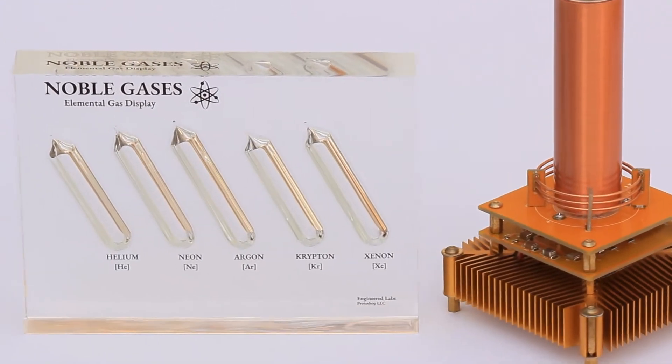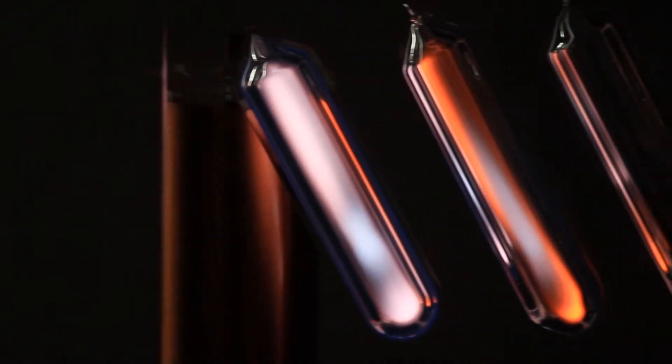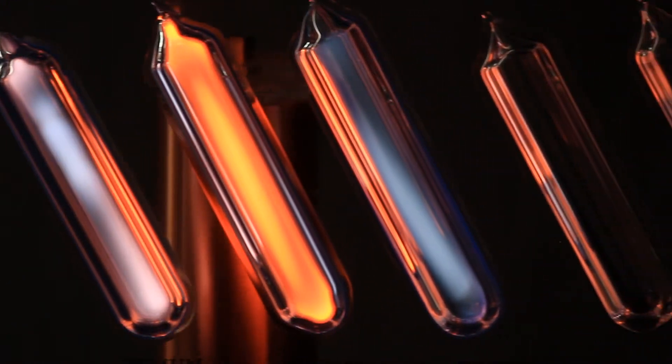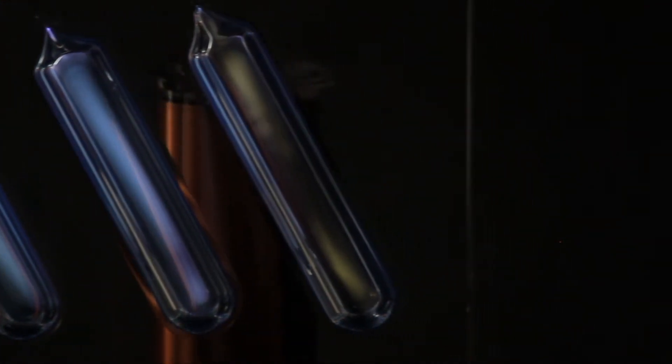This is the Heritage Noble Gas Display, a handheld collection of the noble gases encased in Lucite acrylic. Each glass ampule contains a precise amount of a noble gas under very low pressure.